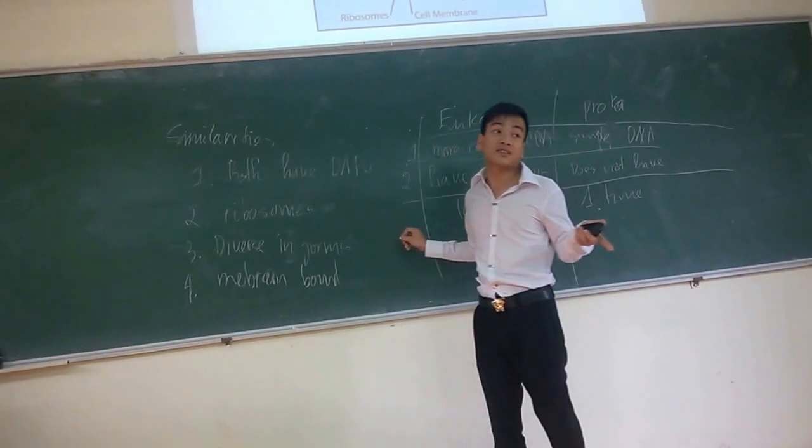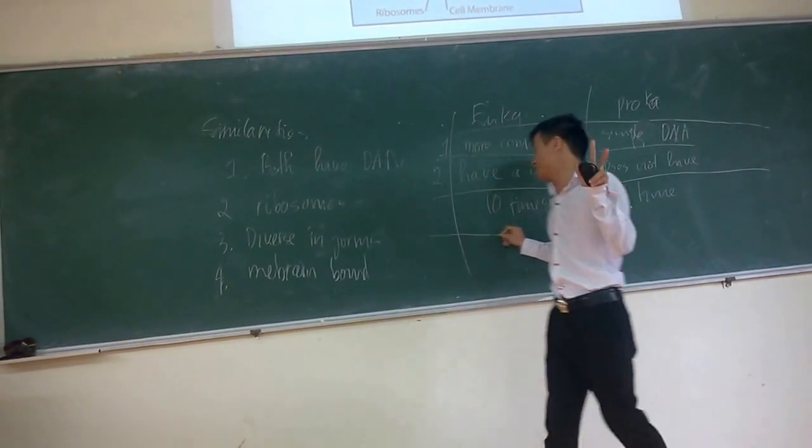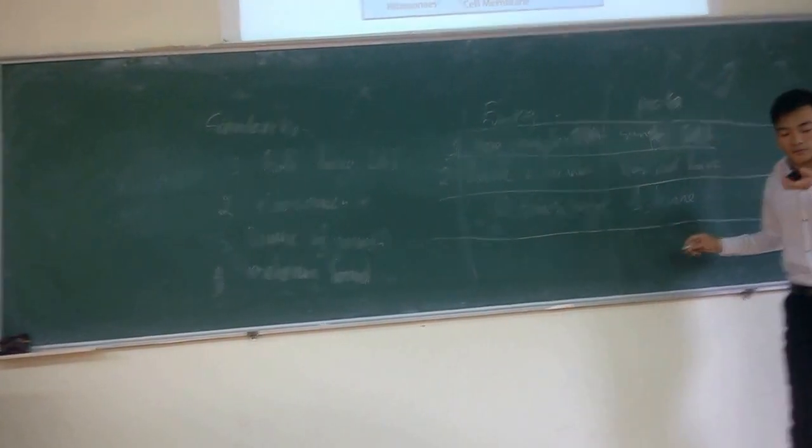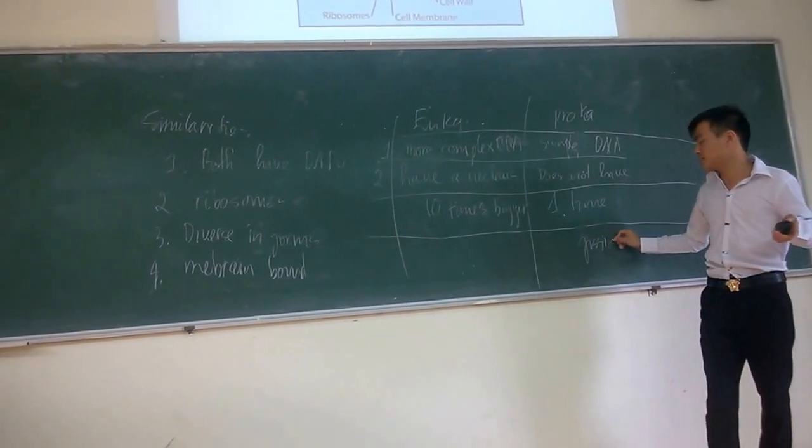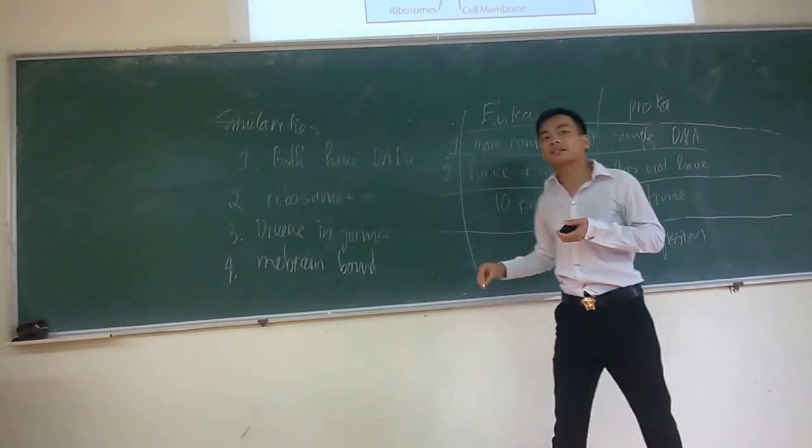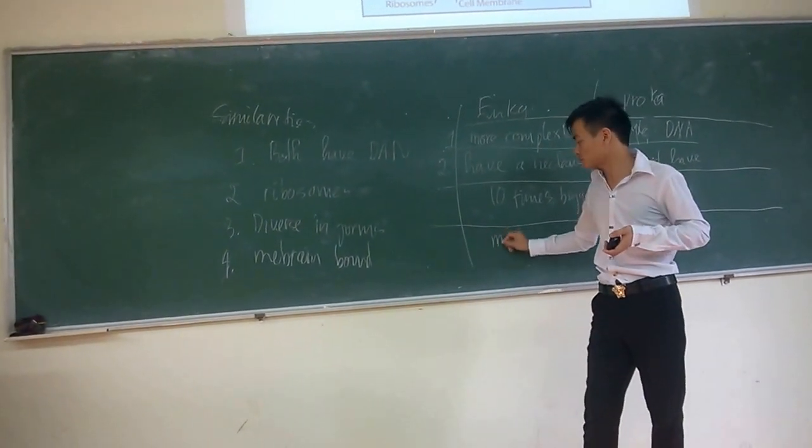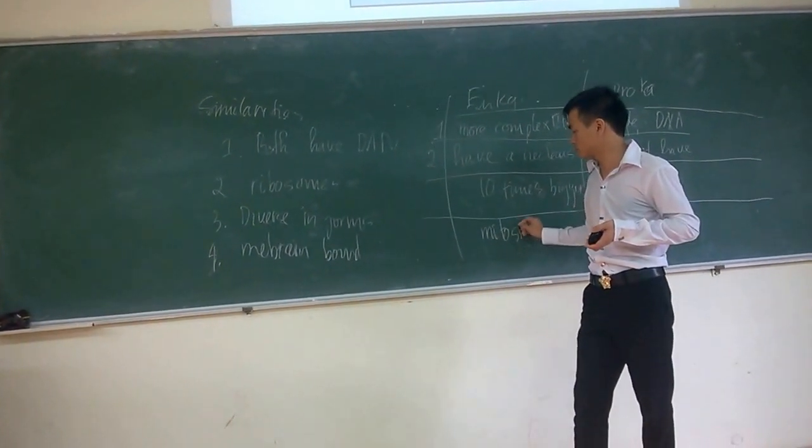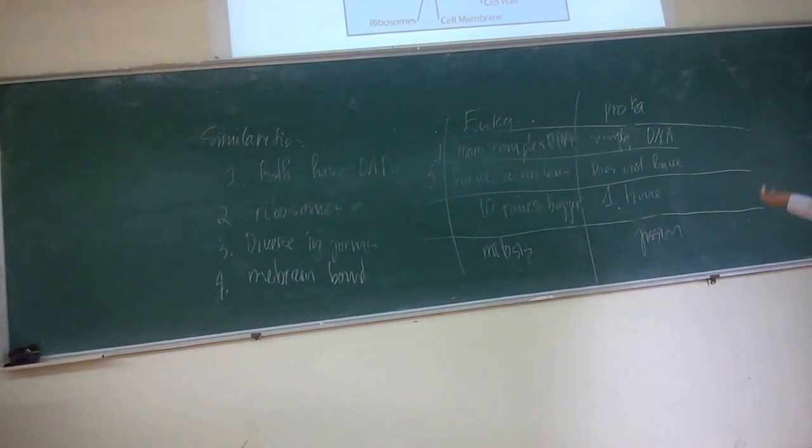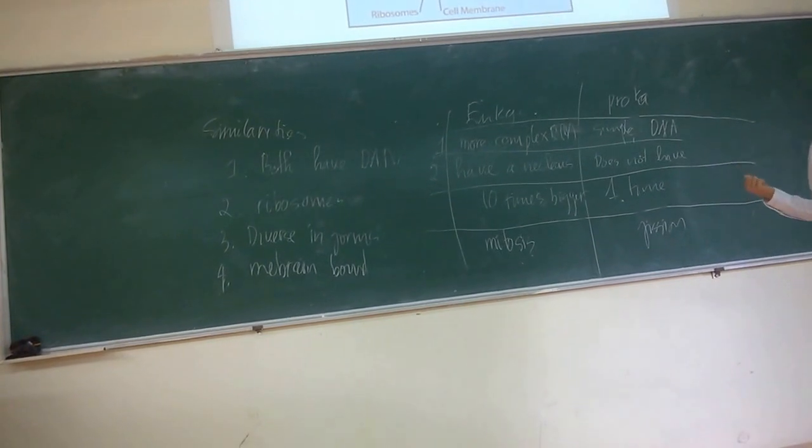And the division. You know, there are two kinds of division, right? The binary fission, meaning that you just divide the cell into two. And the much more complex one is the mitotic system. Right? So, now we have the idea of similarity and dissimilarity between the two of them.